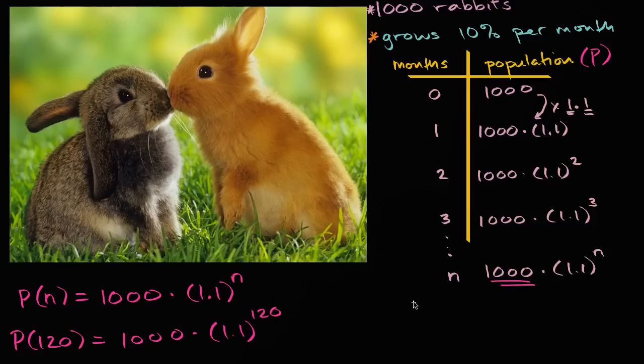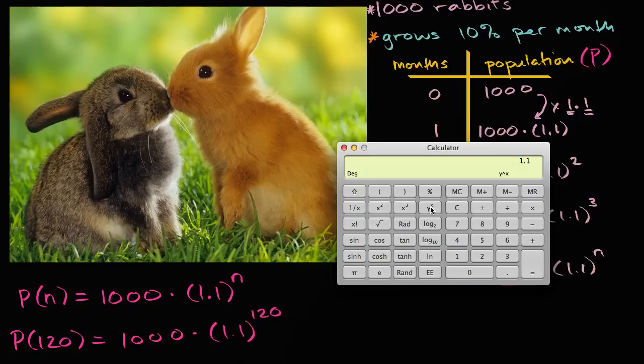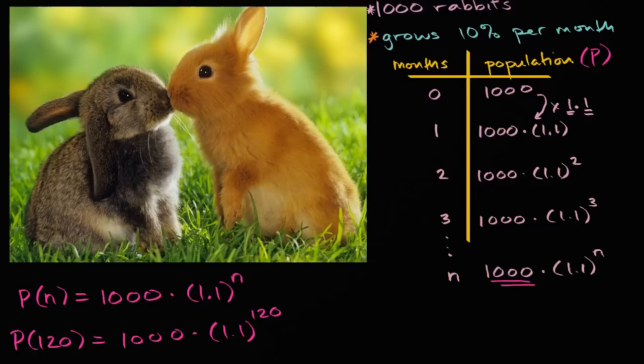And so let me get a calculator out to do that. I cannot calculate 1.1 to the 120th power in my head. 1.1 to the 120th power is equal to that, times our initial population. So times 1,000, is going to be equal to roughly 93 million rabbits.